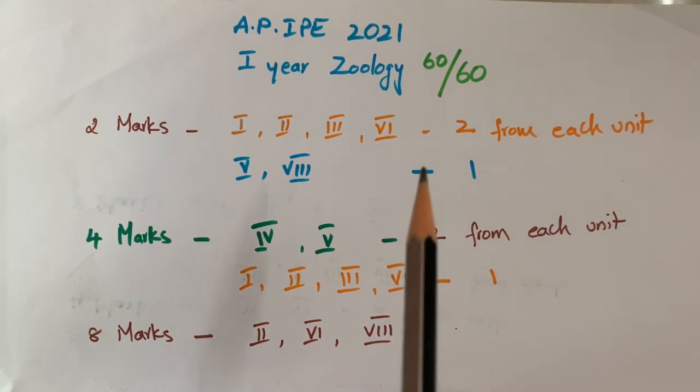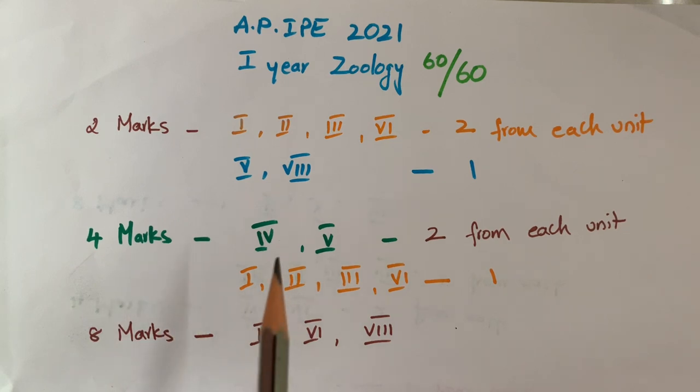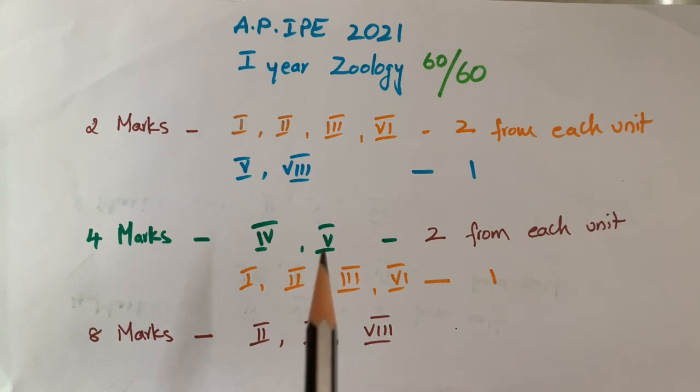Coming to 4 marks questions, 4 marks questions from unit 4 and unit 6. From these 2 units, 2 four-marks questions will come. So if you read these 2 chapters, you can answer 4 four-marks questions.